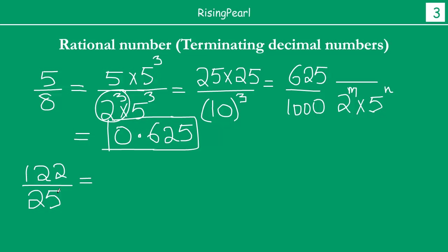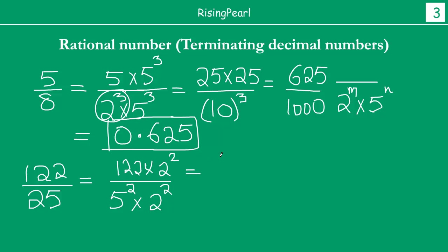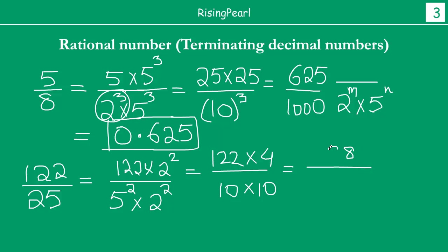Why did we pick 25? Because 25 is 5 squared. So I have 122 divided by 5 squared. Here, I want to multiply by 2 to the power 2. My goal is again to make it 10 to the power something — I am trying to get to the same power to make it a 10. So I multiply both numerator and denominator by 2 squared. The numerator becomes 122 times 4, and the denominator becomes 10 squared, which is 100. That gives 488 divided by 100, which equals 4.88.